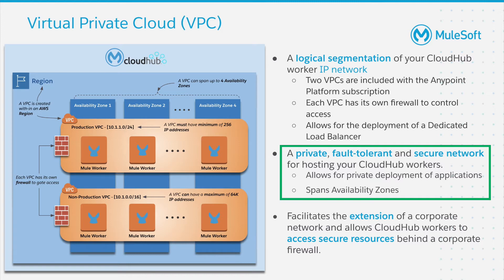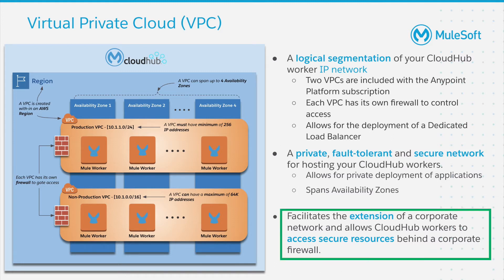These applications can only be reached by other applications inside of the private VPC or peered networks. If an application is deployed into the shared MuleSoft VPC, typically they are external facing. Finally, a VPC facilitates the extension of the corporate network and allows CloudHub workers to be able to access secure resources that may be behind a corporate firewall.